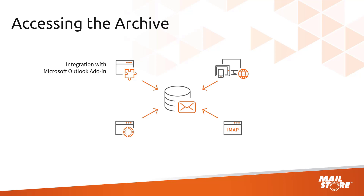The first option is the convenient MailStore Outlook add-in, which can be integrated seamlessly in a user's customary working environment. Second is MailStore Web Access, which allows system and device independent accessing of the archive via any internet browser, even from a smartphone or tablet. Third is an IMAP server integrated in MailStore Server that allows users to access the archive in read-only mode from any IMAP-enabled email client. And of course, the MailStore client itself, which provides the biggest range of functions.